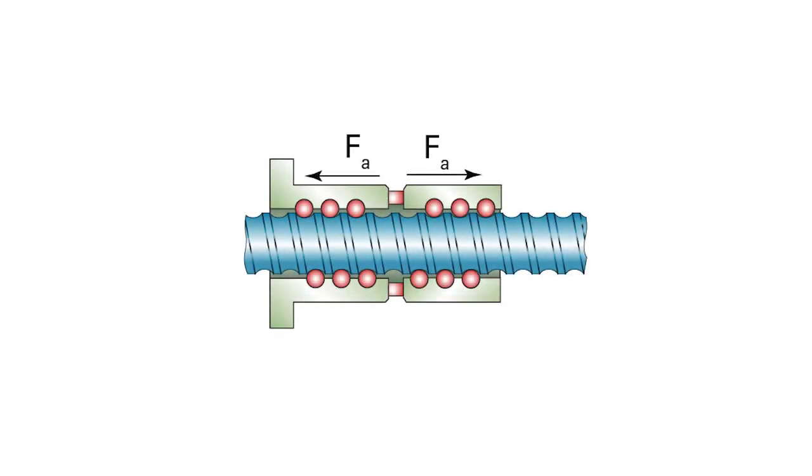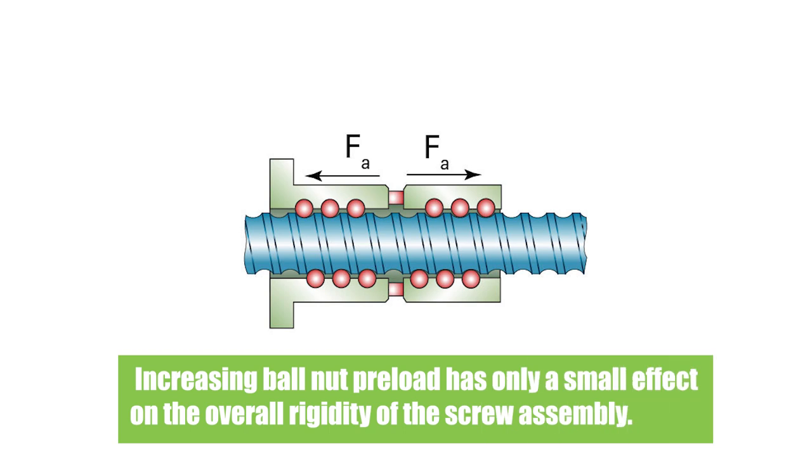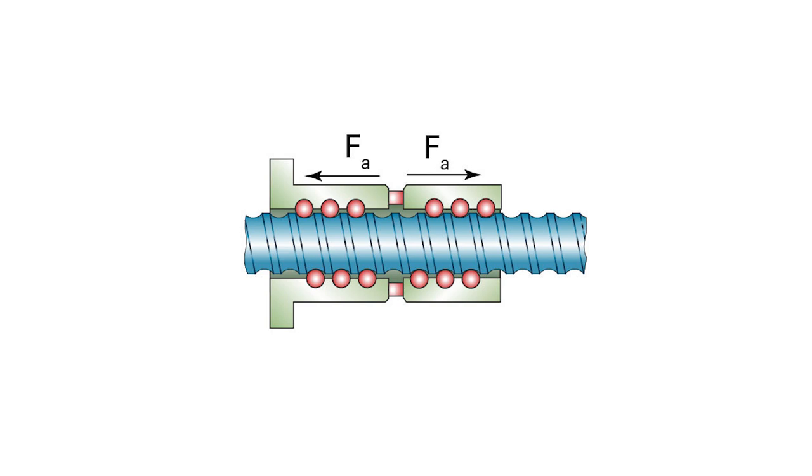For the ball nut, higher preload is commonly associated with higher rigidity, but the ball nut is typically the most rigid component in the system. So increasing the preload, from 3% to 5% for example, has minimal effect on the overall rigidity of the screw assembly. The exception would be if you're upgrading from a ball nut with no preload to one that is preloaded.